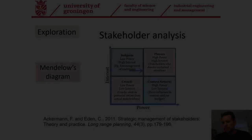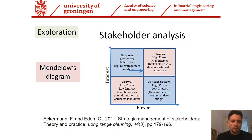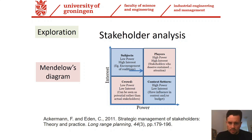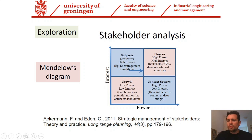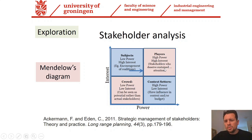For the stakeholder analysis, we will make use of the Mendelov's diagram — a diagram with two axes: interest versus power. It brings together four types of stakeholders and was proposed by Ackerman and Eden in 2011. I strongly recommend reading that paper. Let's start with one of the most important stakeholders: the problem owner, the one with high power and high interest. There may be other key players in your project beyond just the problem owner.